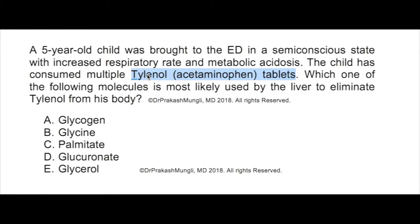In phase one detoxification, hydroxylation is the most common type of reaction, which is done by cytochrome P450 enzymes in the smooth endoplasmic reticulum. Once a chemical or drug is hydroxylated, it will further undergo phase two detoxification reactions.